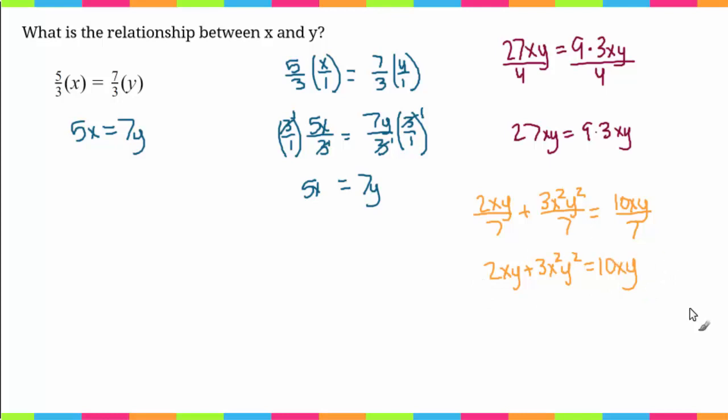Okay, so going back to the original problem, now that we're at this step, all we really have to do is solve for x. So we would just divide this side by 5, those would cancel out, and then we would divide this side by 5. So then we're left with x equals 7 over 5 y.